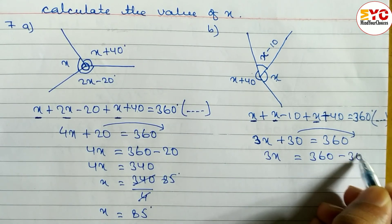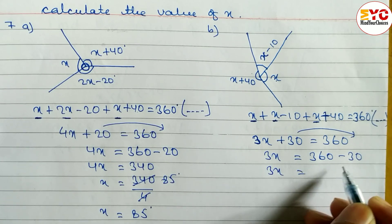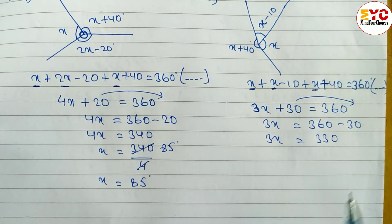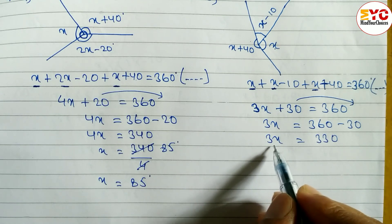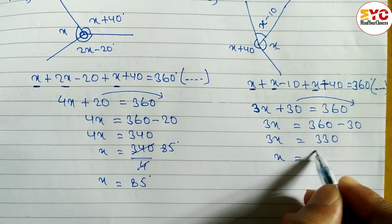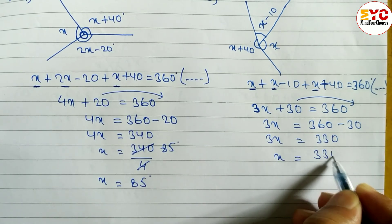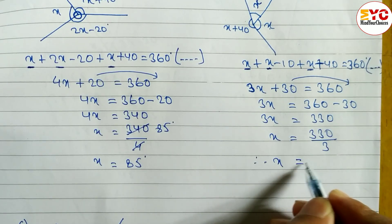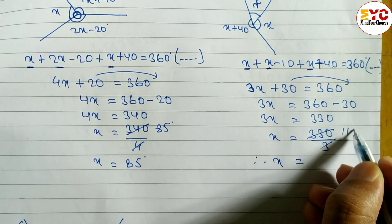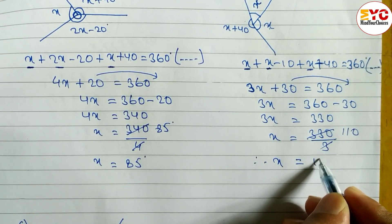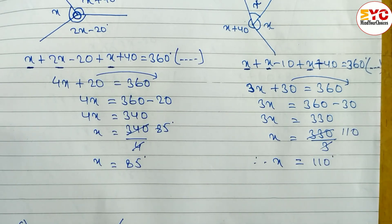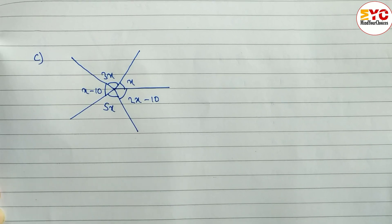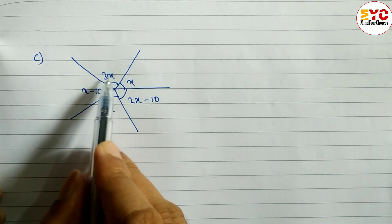3x equals 330, so x equals 330 divided by 3. Therefore the value of x is 110 degrees.